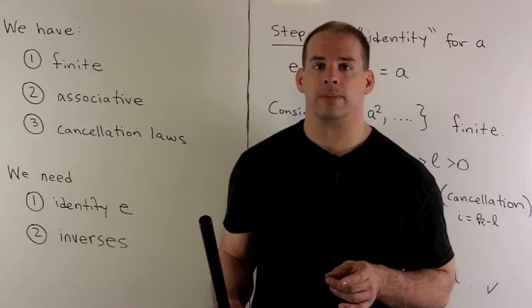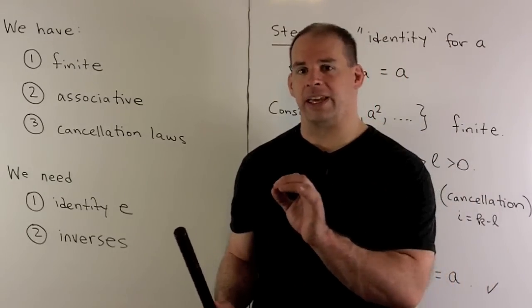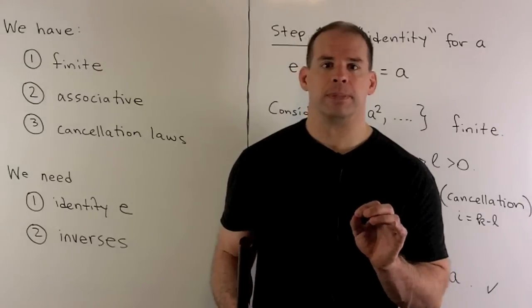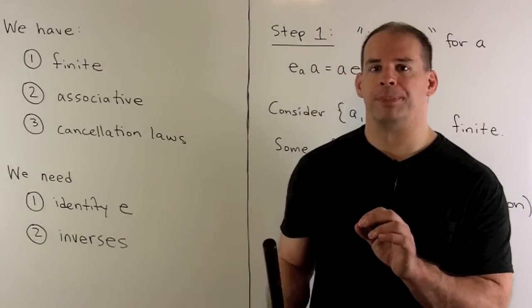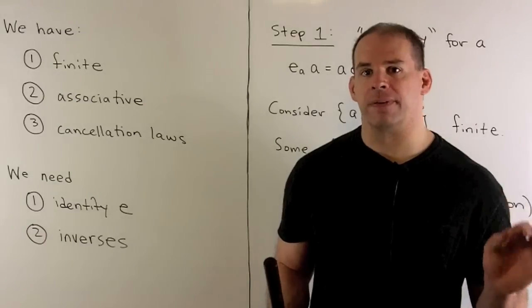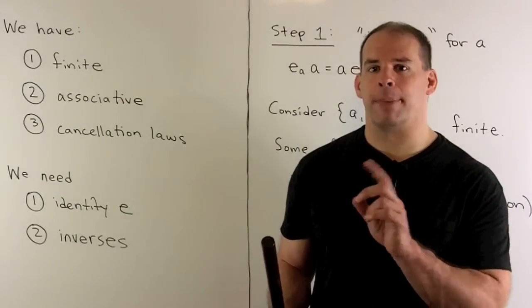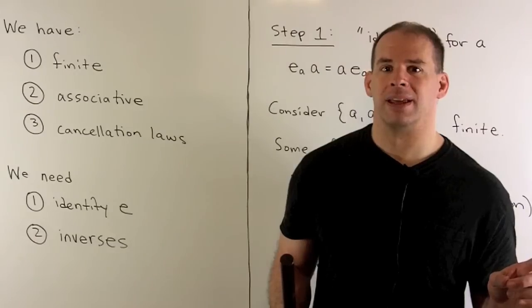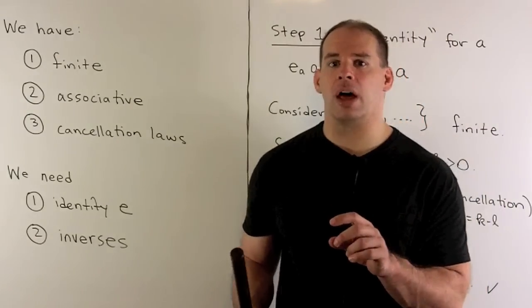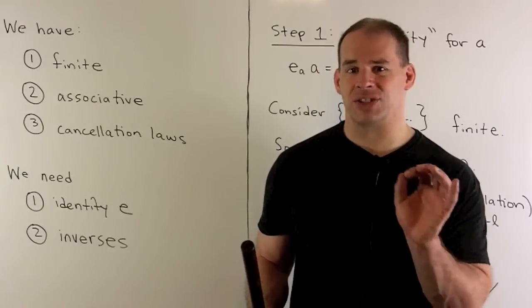So, what's our strategy? Well, we're going to take any element A in G, start raising it to powers. Because G is finite, the set of all powers of A is also finite, which means some power of A is equal to another power of A. Then we can use the cancellation law to bring the exponents down to something useful.